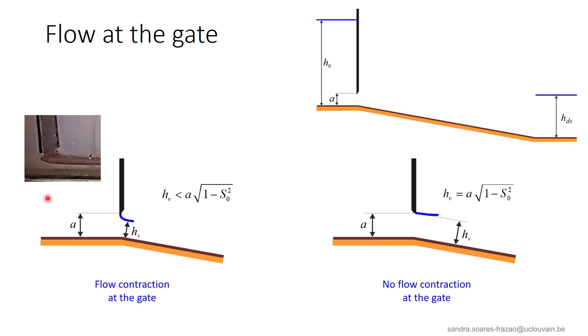As a consequence, the upstream water depth HV will be smaller than the gate opening A, and a contraction coefficient will be used to account for the reduction in discharge induced by this contraction, as we will see later. But for a well-designed gate, as illustrated on the right figure, there is no contraction of the flow in such a way that the upstream flow depth HV is directly obtained from the gate opening A, taking into account the bed slope here if necessary.